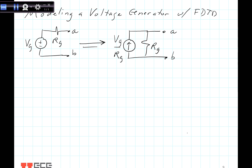In the Norton equivalent, we have an equivalent current source which is Vg divided by Rg, and then our resistance Rg goes in parallel. We're going to take this and connect it onto our transmission line, and we're going to choose the symmetric transmission line model.